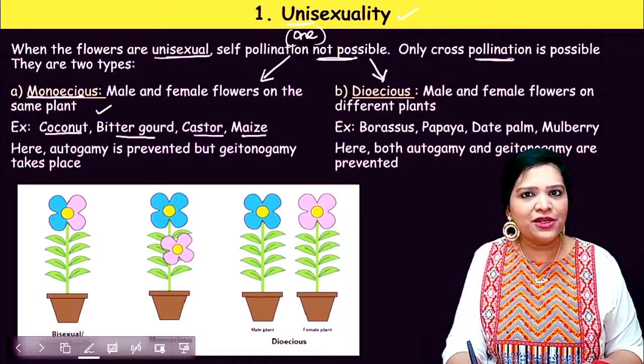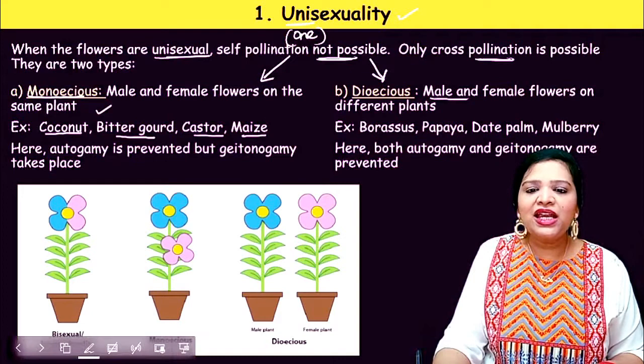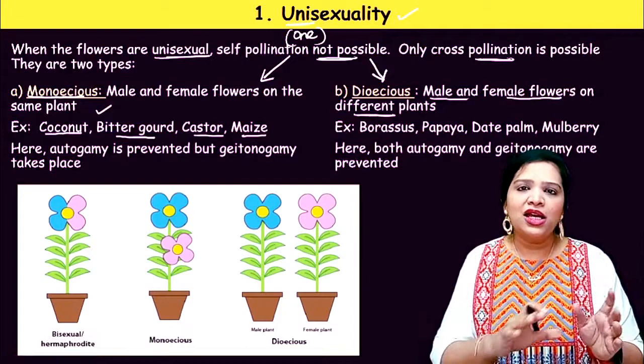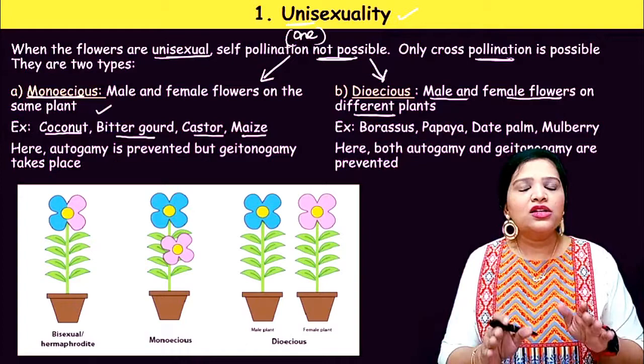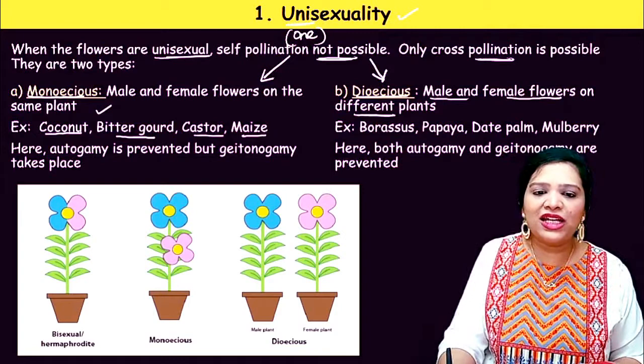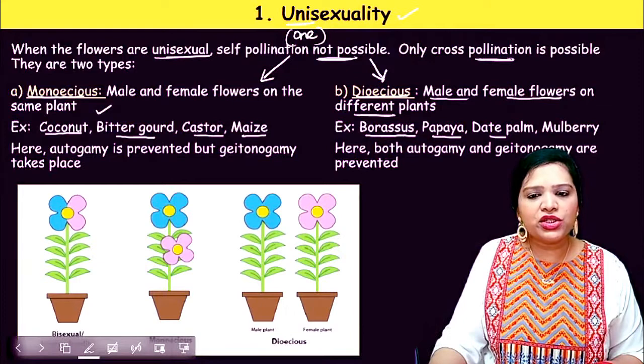The second type is dioecious, where male and female flowers are present on different plants — one plant has completely male flowers and another plant has completely female flowers. Such plants are called dioecious plants. Examples are Spinach (Spinacia), papaya, date palm, and mulberry.